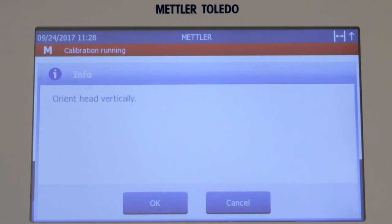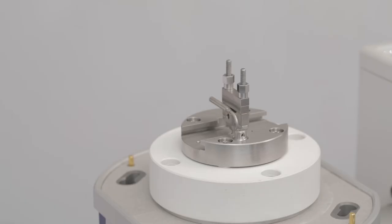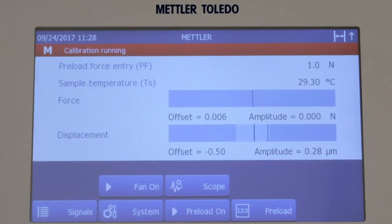Tap OK to confirm the vertical orientation of the DMA measuring head. Tap OK to confirm that the driveshaft is free from any obstruction. The initial force calibration without the weight is performed.